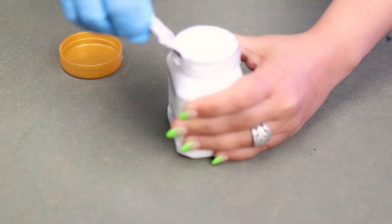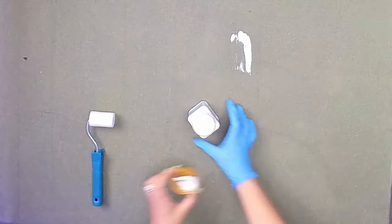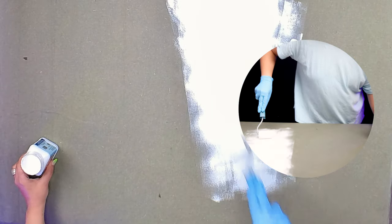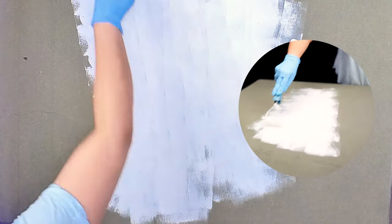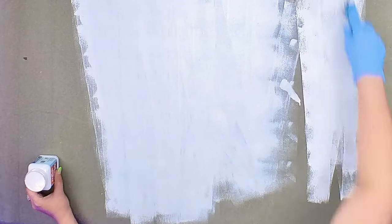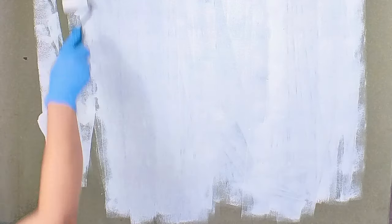The first step is to prime the surface and I'm using gesso for this project. I like to use a roller, you could use a brush, but basically you want to get a smooth application of gesso and probably a couple of layers.